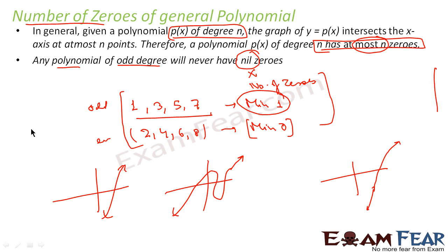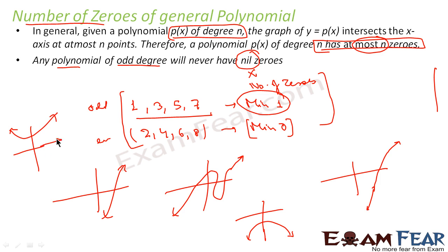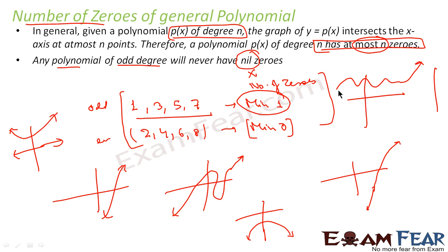But in the case of an even function, the graph has both ends going up or both ends going down. In that case, there can be a scenario where it never touches the x-axis. If both ends are going up, the graph can sit entirely above the x-axis, giving zero zeros. So for even degree polynomials the minimum number of zeros can be zero.